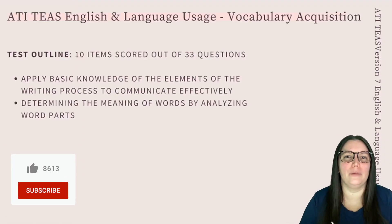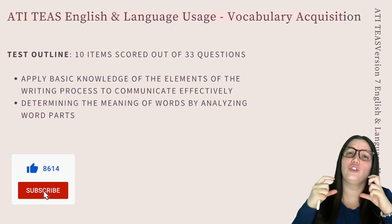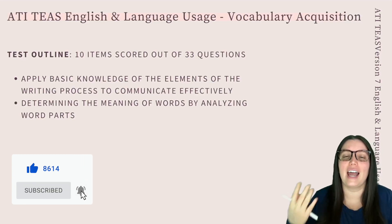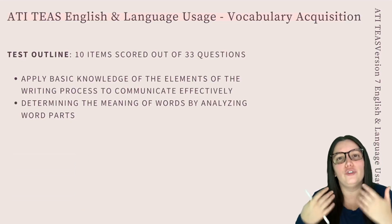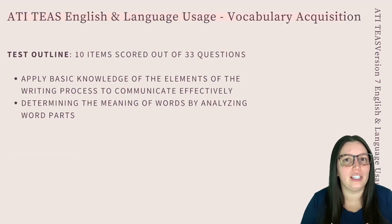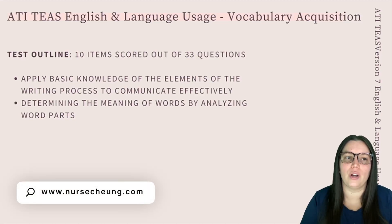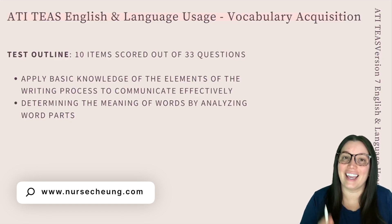Starting off with the objectives for vocabulary acquisition, there's going to be a total of 10 questions that are scored out of the overall 33 for this portion of the test. The objectives that you will need to know are how to apply basic knowledge of the elements of the writing process to communicate effectively, and determining the meaning of words by analyzing word parts.